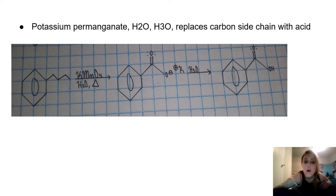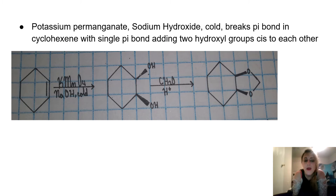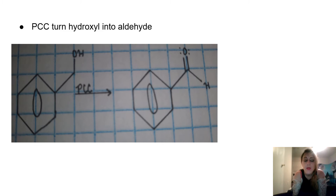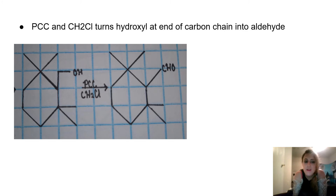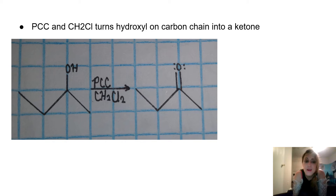Potassium permanganate, water and acid replaces a carbon side chain with a carboxylic acid functional group. Potassium permanganate and sodium hydroxide cold breaks the pi bond in cyclohexene, adding two hydroxyl groups cis to each other. PCC turns a hydroxyl into an aldehyde. PCC and CH2Cl2 turns a hydroxyl at the end of a carbon chain into an aldehyde, and turns a hydroxyl in the middle of a carbon chain into a ketone.